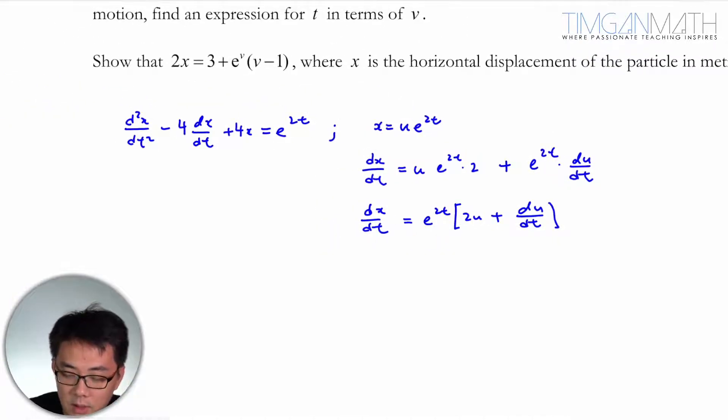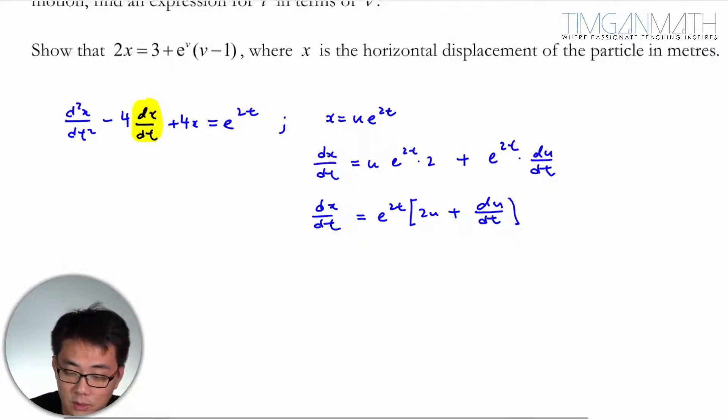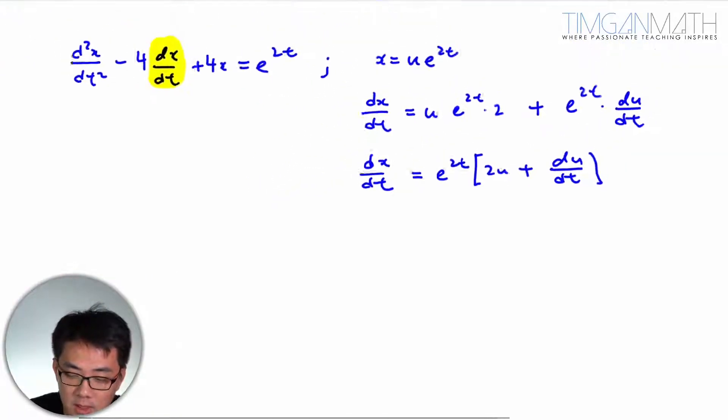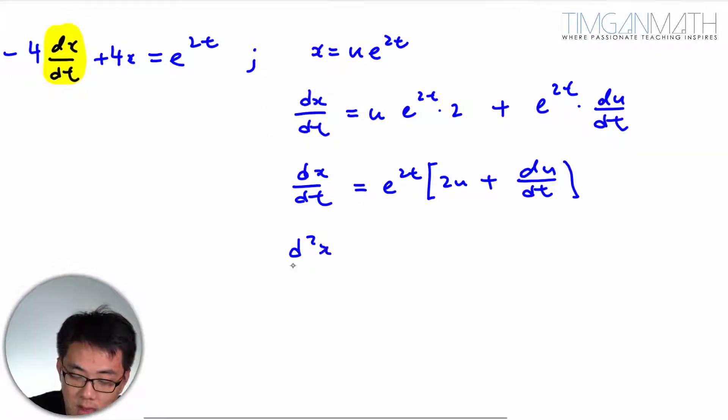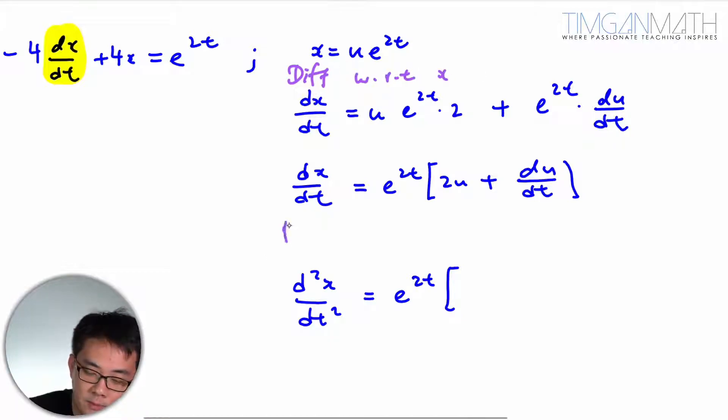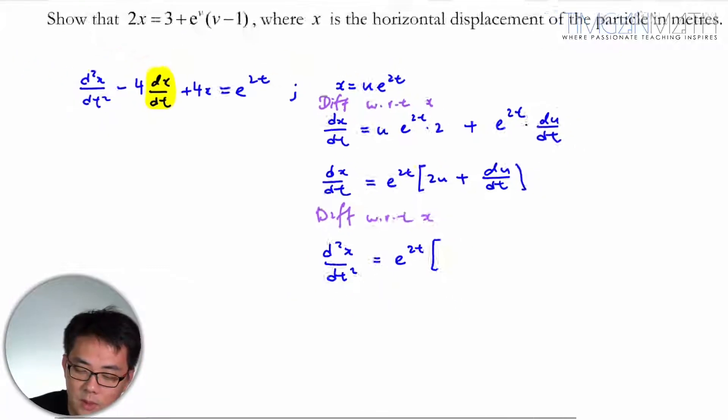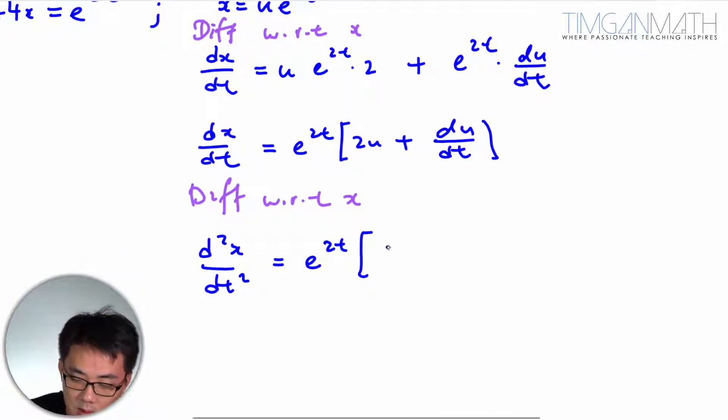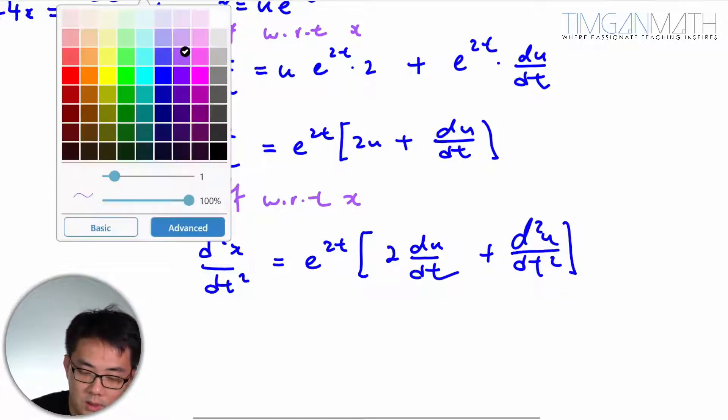Now we need the second derivative. We'll differentiate dx/dt again to get d²x/dt². Using the product rule, differentiate e^(2t)(2u + du/dt) with respect to t. This gives us 2du/dt plus d²u/dt² from differentiating the first term.